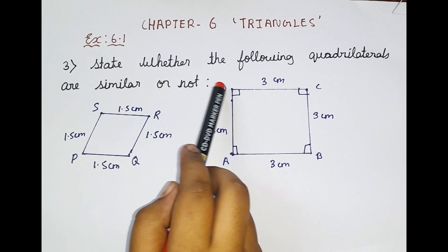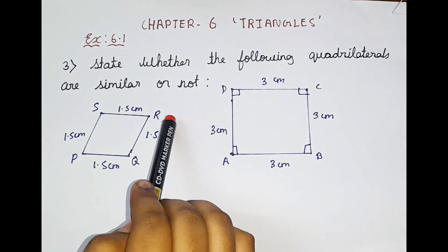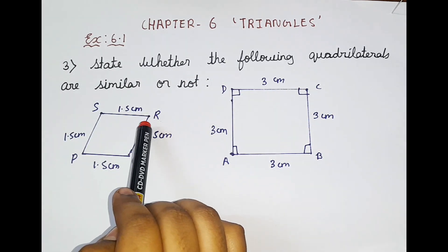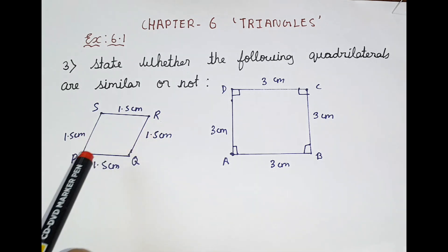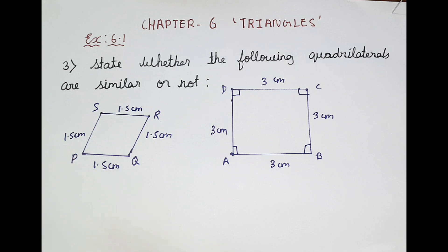State whether the following quadrilaterals are similar or not. So what are the examples for quadrilaterals? Quadrilaterals means, for example, we can call parallelogram — it is a quadrilateral. And what else? Parallelogram, square, rectangle, rhombus — everything is a quadrilateral.